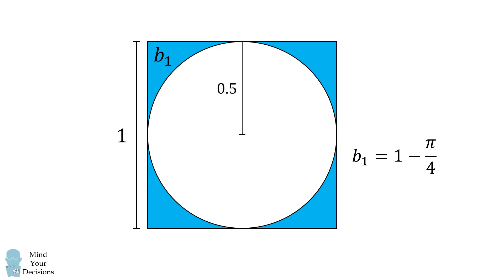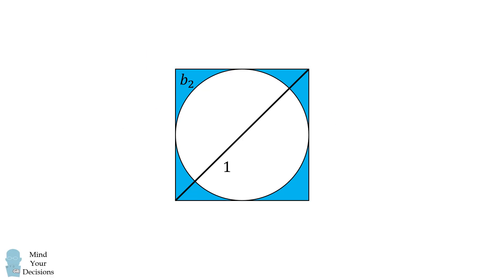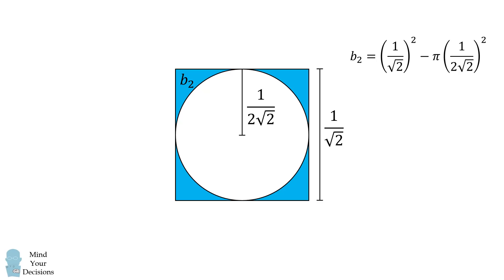Now let's calculate the next area b2. The diameter of this circle is equal to 1. When we inscribe a square into it, its diagonal will exactly be a diameter of the previous circle, so the diagonal of this square is equal to 1. Using a 45-45-90 right triangle, if the hypotenuse is 1, one of the legs is 1 divided by the square root of 2. So the side of the square is 1 over √2, the diameter of the next circle is 1 over √2, and after simplification, b2 equals 1/2 minus π over 8.